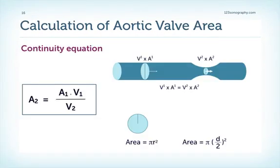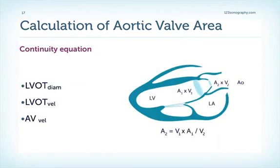Now for some math. To calculate the aortic valve area, this is based on the continuity equation, which takes the fact that the relation of area and velocity always stays the same before and within the stenosis. We can calculate the area by measuring the diameter and multiplying by π. We need to measure the LVOT diameter in the parasternal view, the LVOT velocity by pulsed wave Doppler in the five-chamber view, and the aortic valve velocity by continuous wave Doppler in the five-chamber view, then put all of this into the equation.